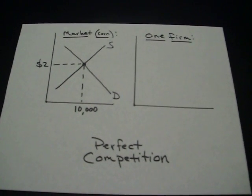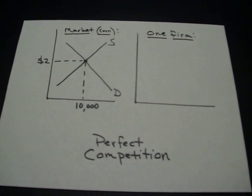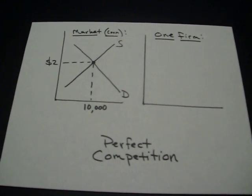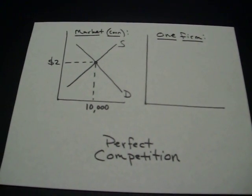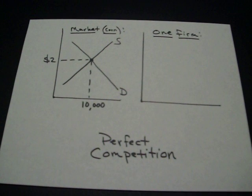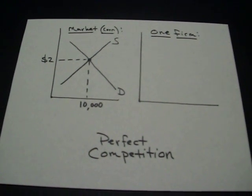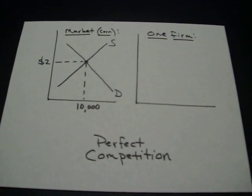Let's briefly look at what happens in perfect competition. I've got a side-by-side graph. On the left side, I've got the market for corn, which has determined the price is $2. It's your equilibrium price. Quantity, 10,000.